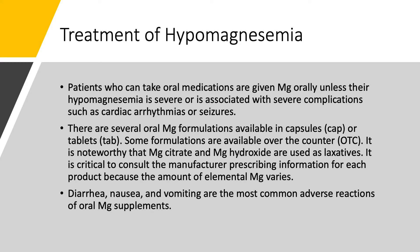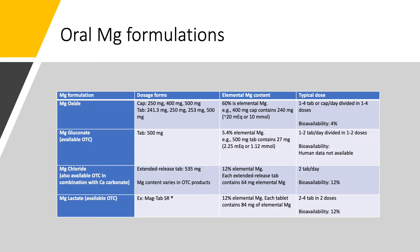We have many oral formulations of magnesium — capsules and tablets, some available over-the-counter. Two formulations, magnesium citrate and magnesium hydroxide, are used as laxatives. If you are giving a magnesium salt you're not familiar with, or the patient is already taking one, have them bring the bottle and read it to find out exactly how much elemental magnesium is present, because it really varies by manufacturer. Unfortunately, we cannot give too much oral magnesium because of GI side effects: nausea, vomiting, and diarrhea. Imagine someone who has low magnesium because of diarrhea — you give them magnesium and now they get diarrhea from it. That is a limiting factor.